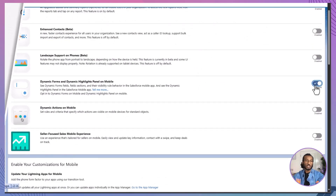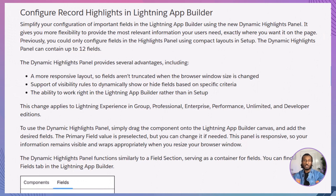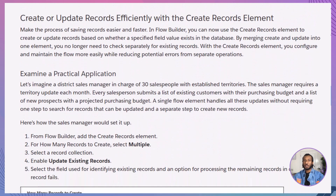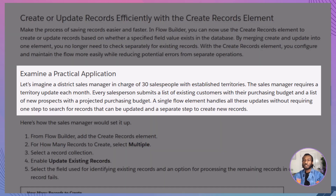Alright, that's a big win for page layouts. But what about automation? Let's move on to Flow Builder, where we've got a brilliant update to the Create Records element. Instead of splitting out steps to check if a record exists before updating or creating, you can now do it all in one go. Think of a district sales manager who collects monthly updates from reps. Whether it's existing customers or brand new leads, this one element can create or update records based on whether a matching field value is found in the system.